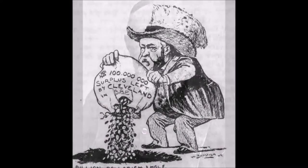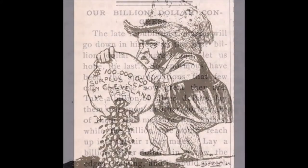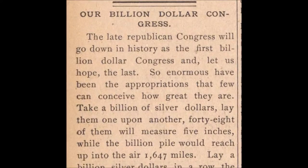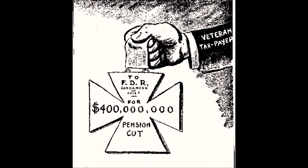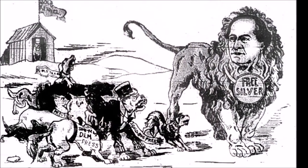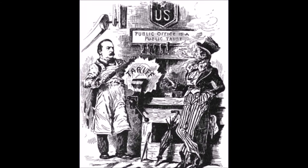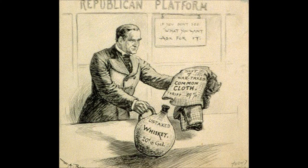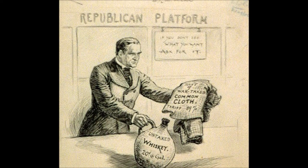The Billion-Dollar Congress is the 51st Congress and was the first to pass a billion-dollar budget. They gave pensions to Civil War veterans, increased government purchases of silver, and passed the McKinley Tariff Act of 1890. The McKinley Tariff Act was a protective tariff that raised the tax on foreign imports by 50%, backed by Republicans who liked higher taxes on imported goods.